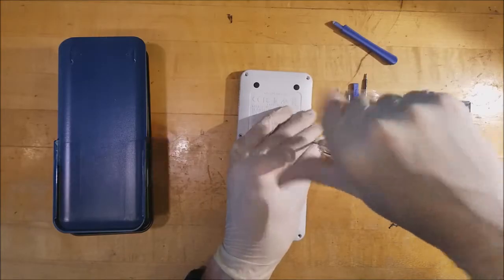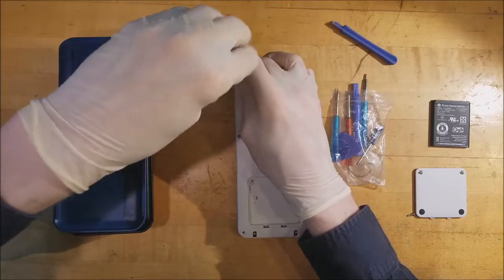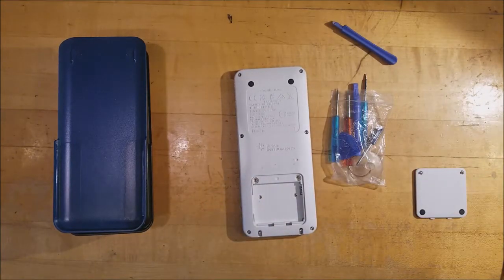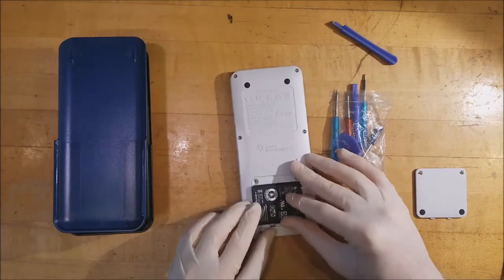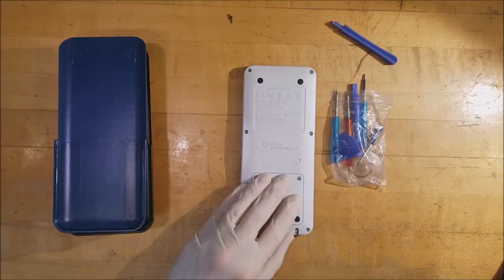And once we've put those back in, we can re-attach the six Torx screws at the four corners and those two middle locations. With those tightened, I'll put the battery back in, making sure I get the polarity correct. Put the battery cover back on, and re-secure its two Phillips screws.